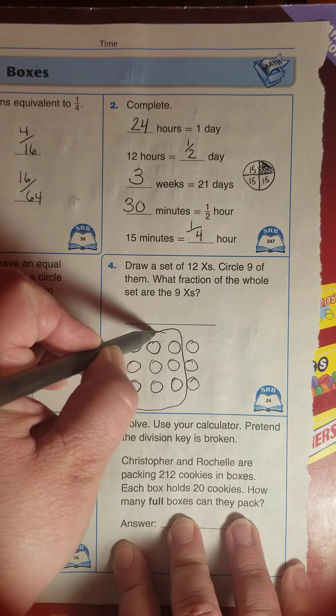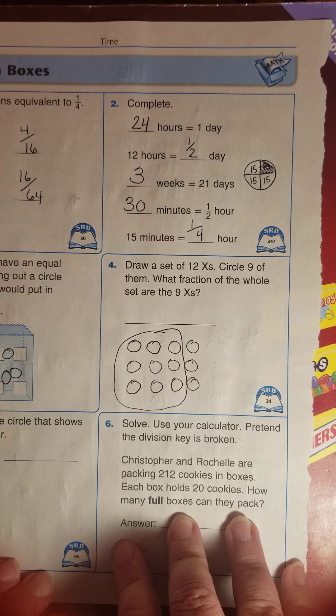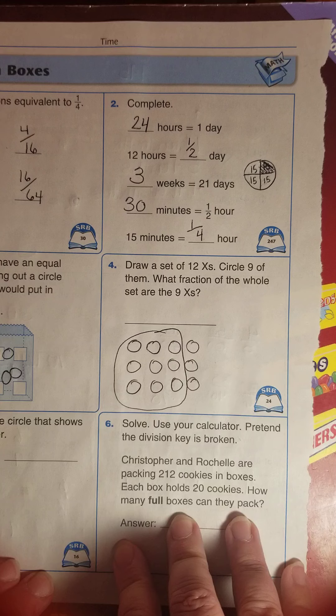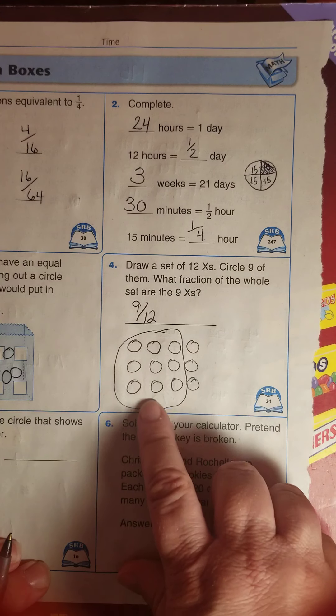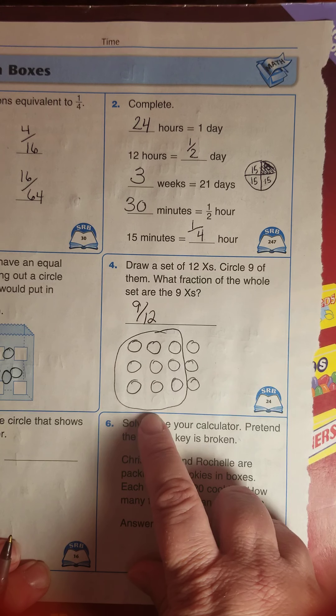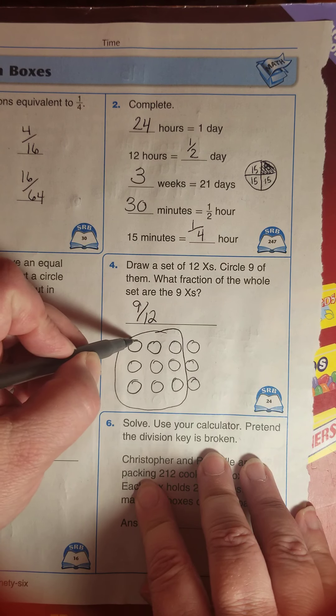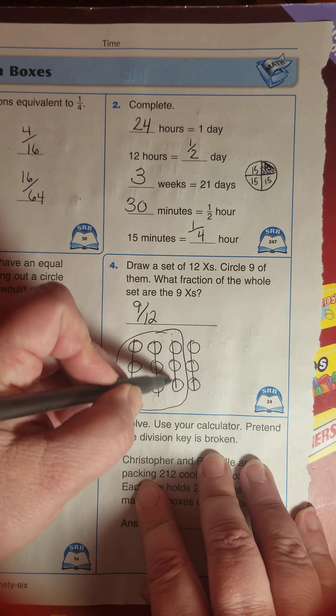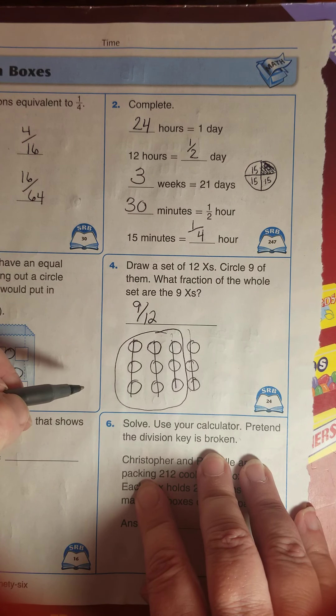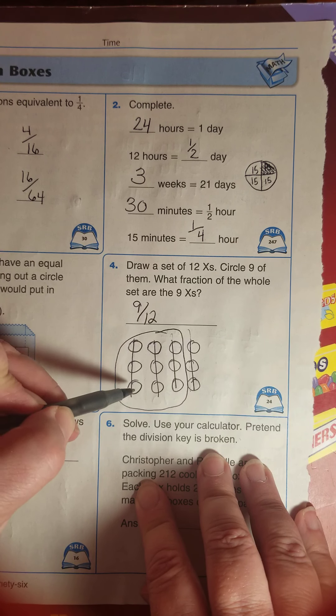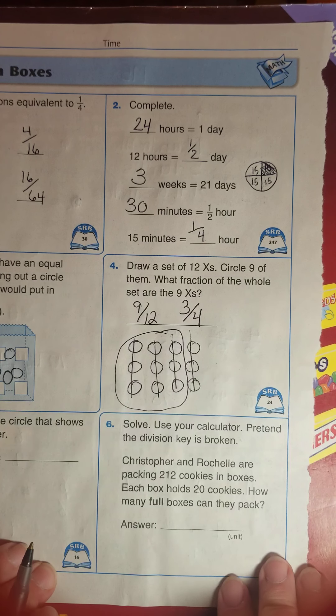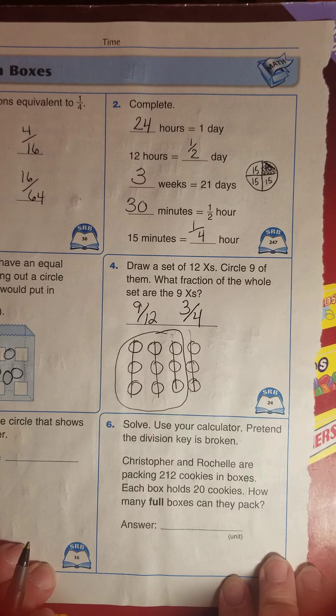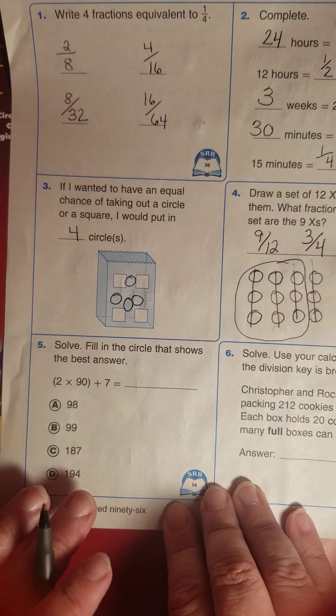Circle nine of them. One, two, three, four, five, six, seven, eight, nine. There we go. What fraction of the whole set are the nine X's? There are a couple different names for this, actually. We could call it nine twelfths, and we would be correct. Do any of you see another name that would be equivalent, that uses smaller numbers? What if we divided this twelve into fourths? How many fourths did I circle? One-fourth, two-fourths, three out of four parts. I would have to say that three-fourths is equivalent to nine-twelfths.